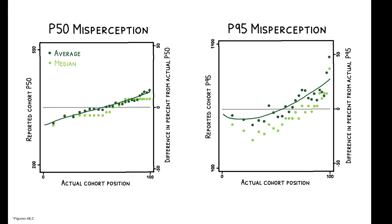As seen here, there is an increasing relationship between the perceived cohort P50 and P95 income levels and the respondents' own position in the distribution. Those at the very top overestimate P95 by nearly 50 percent.